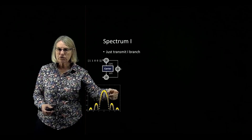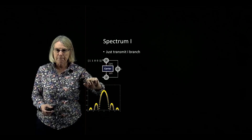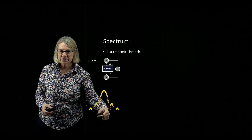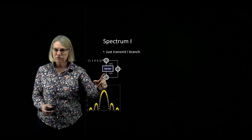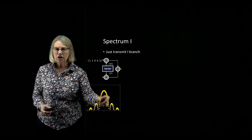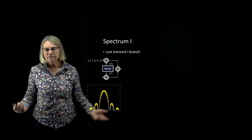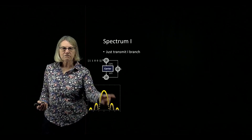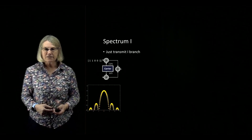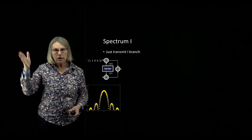Here is the spectrum of what's coming out after that modulation. There's the same center frequency, which refers to the carrier, and then a cosine modulation. Depending on the speed of the modulation, there's a certain bandwidth which is occupied.